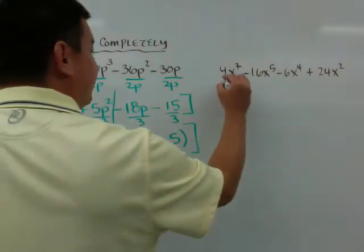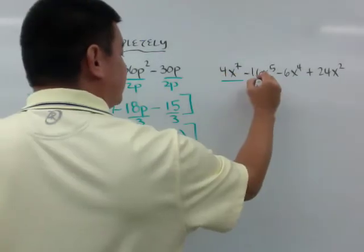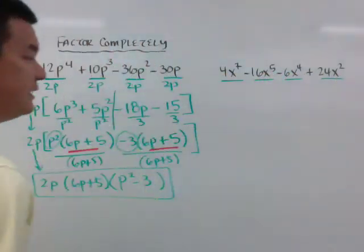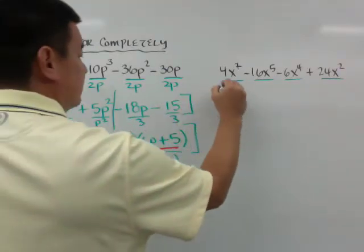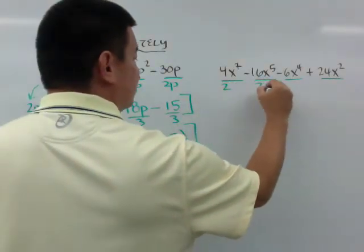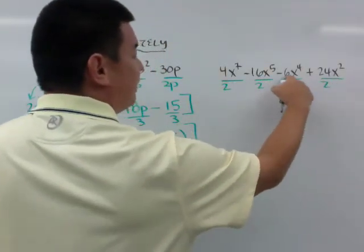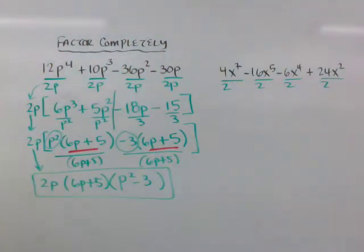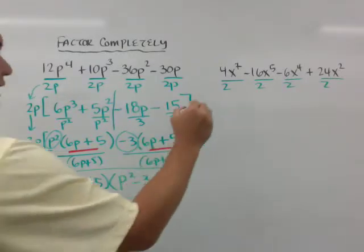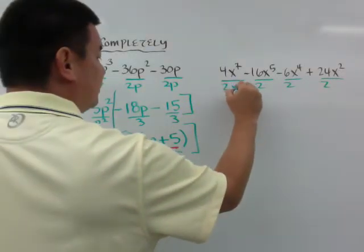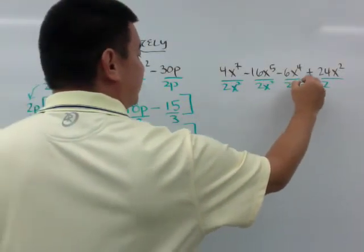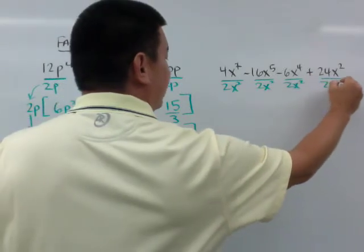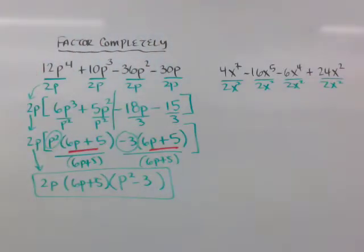So over here, I'm going to look at what I can pull out first again. And I can see that I can pull a 2 out from the numbers. I can't pull a 4 because of this 6. And I can pull 2x's out, so x squared.